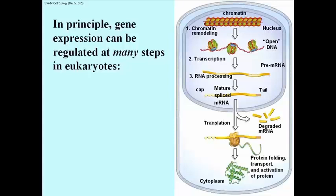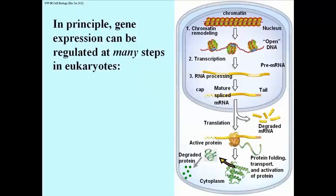There are also other aspects: protein folding, transport, and activation. Proteins have to assume their correct three-dimensional shape, and this is often facilitated by proteins called chaperone proteins. Those proteins are also subject, at least in theory, to regulation — all of which must be correctly controlled to get the final active protein. The proteins that are produced will also be degraded, and if you have ways of controlling the rate at which proteins are degraded, you have yet another way to control gene expression in the broadest sense of how much of a polypeptide is actually present in a cell at any given moment.